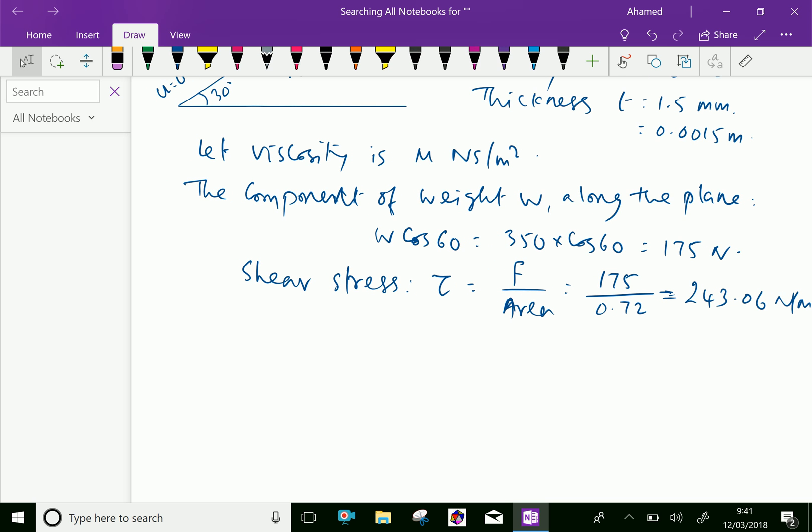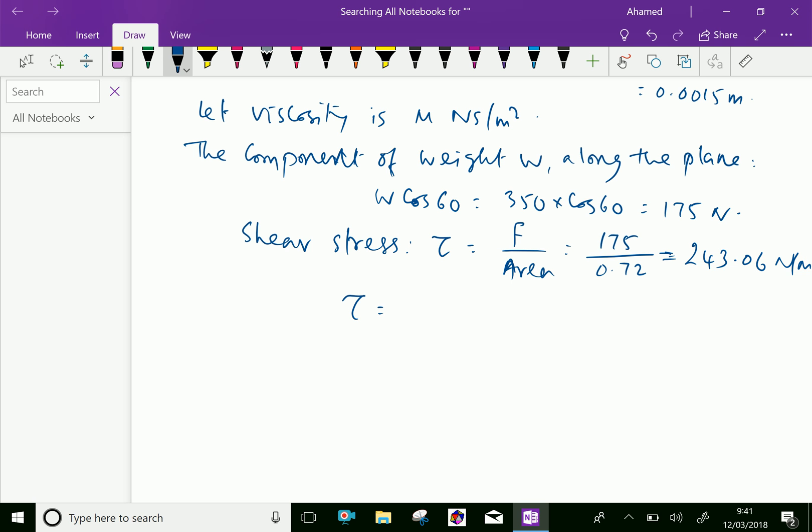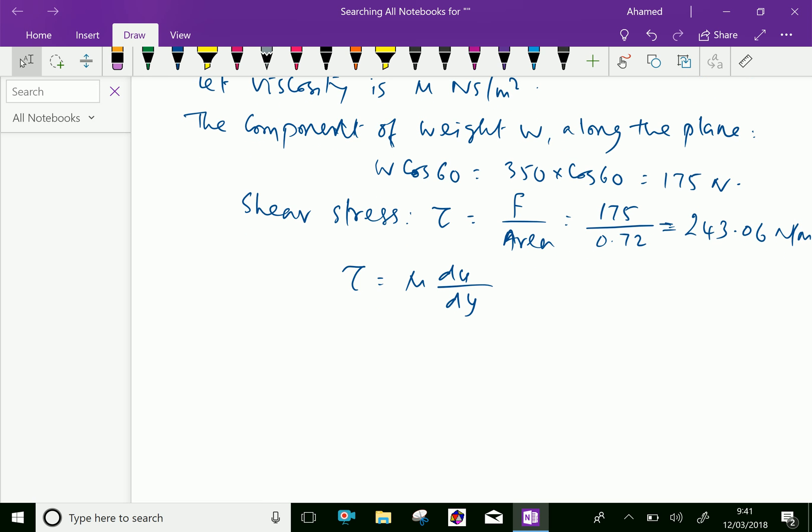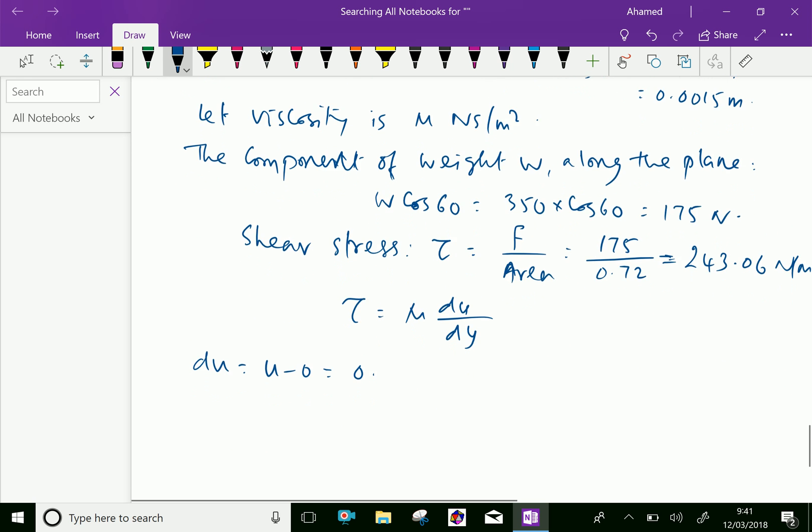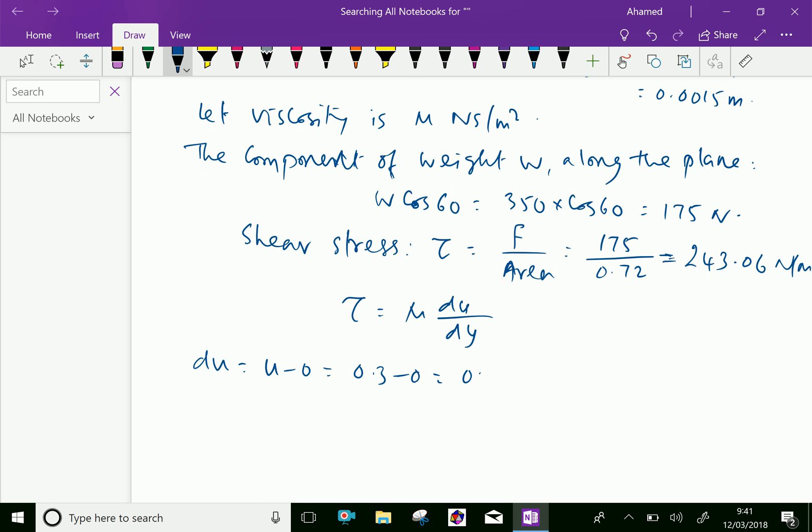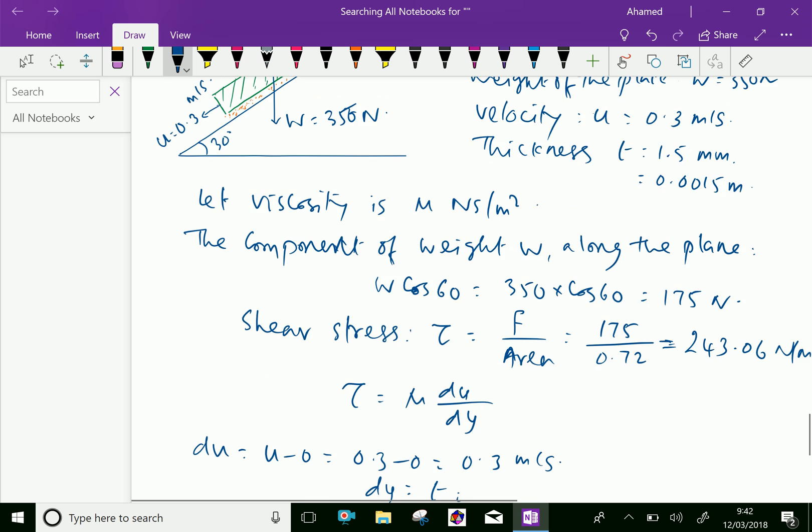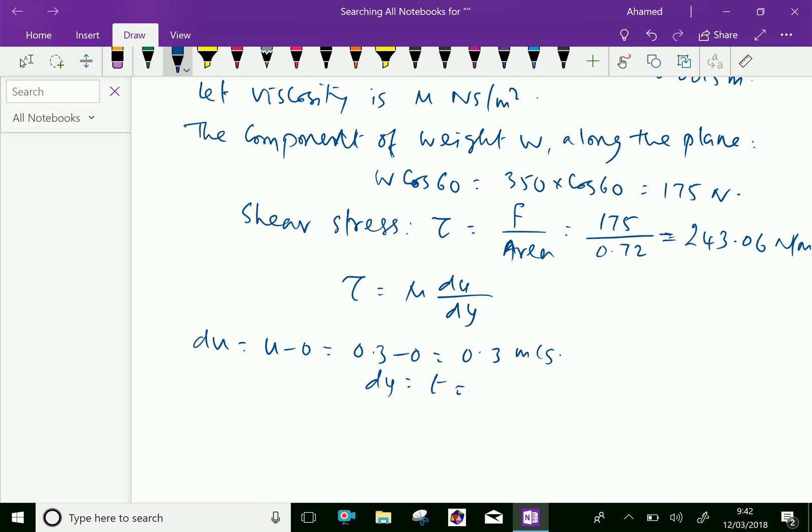We know the relation that tau equals mu into du over dy. Here, change in velocity du equals u minus 0, that is 0.3 minus 0 is 0.3 meter per second. And dy is the thickness of the oil film equal to t, given as 1.5 mm, which equals 0.0015 meter.